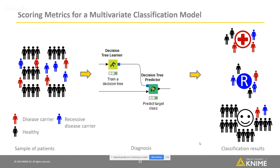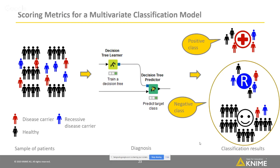Here the last group is healthy people. To evaluate this classification, I need to decide again how to map these three classes into the positive and the negative classes. The decision is arbitrary, and I decide that disease carriers and recessive disease carriers are the positive classes, while healthy people are the negative class.